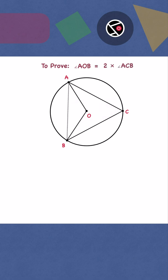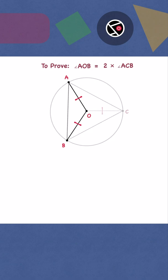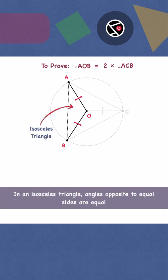Connect AB and OC. OA, OB, and OC are equal — radii of the same circle. Therefore triangle AOC and triangle BOC are isosceles. Let the two equal base angles be x degrees.